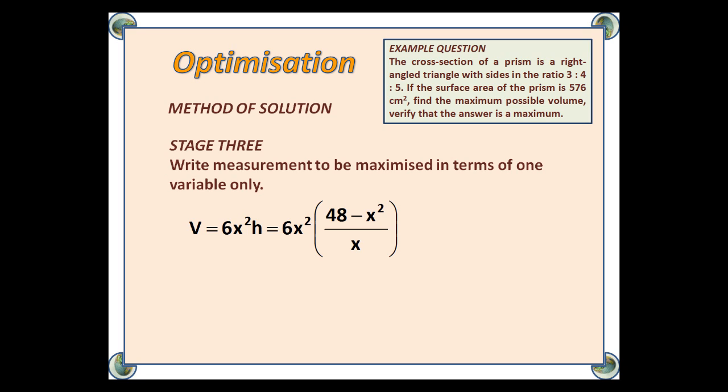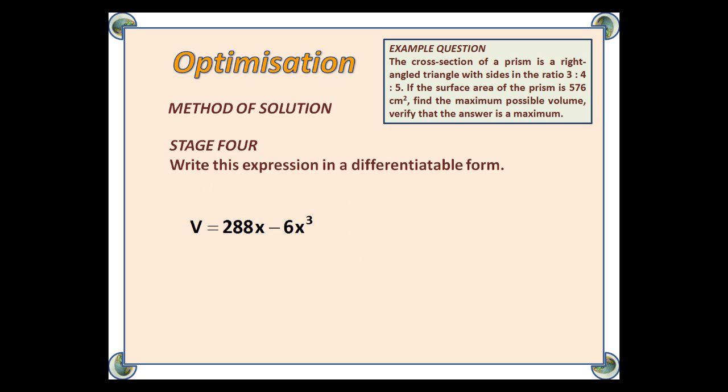So, we get 6x² brackets (48 - x²)/x, close brackets. Stage 4: Write this expression in a differentiatable form. At the moment, with the brackets, we can't do that. But if we get rid of the brackets by multiplying them out, we get V = 288x - 6x³, which we can differentiate.